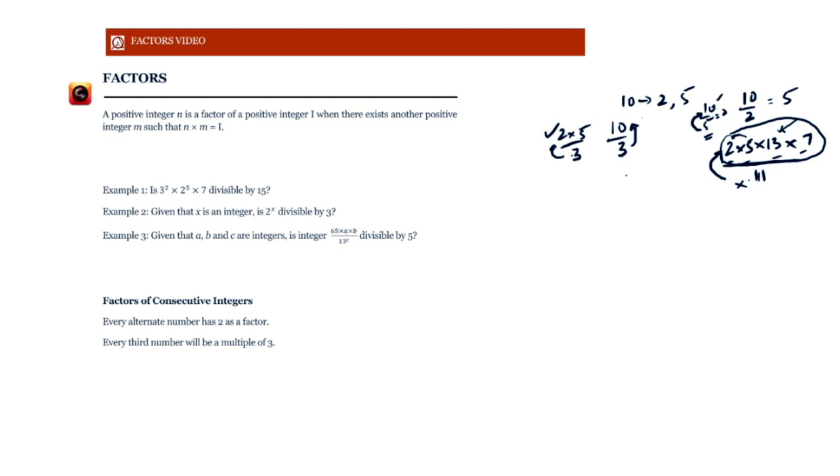When we say 10 into 5, that is 2 into 5 upon 5, the 5s are getting cancelled. That is why what we are left with is an integer. But over here, we cannot cancel off the 11 and be left with an integer. These are the only integers that it has. So that is why 11 is not a factor of this number.